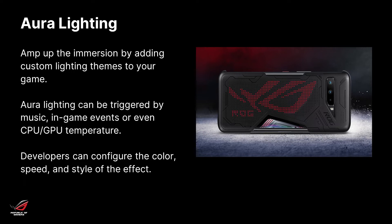To throw an example out there: say that you're developing a stealth game. Aura lighting could basically act as a proximity sensor to show you if enemies are close. Because you can configure both the color, the speed, and the style of the Aura lighting effect — when there are no enemies around, you can have a strobing green effect showing you that you're in no harm. Then as enemies come closer, you can have the color change from green to yellow and finally to red, and you can have the speed increase as well, so when you're in imminent danger, the phone flashes really fast with a warning red light. You can take that layer of interactivity and information and remove it from the screen, using the Aura lighting instead.